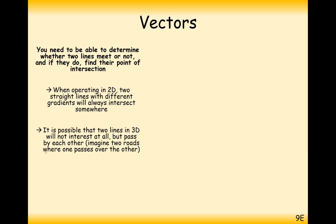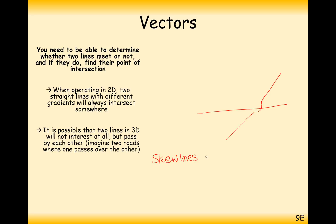Imagine two roads where one passes over the other — one road going one way, another going underneath and looping around. Similarly, imagine two aeroplanes flying in the air; from the ground it can seem like they've intersected, but really one has gone above the other. So we have three options: skew lines, intersecting lines, and parallel lines.